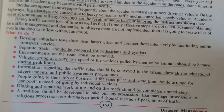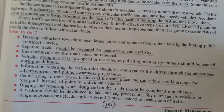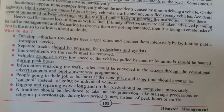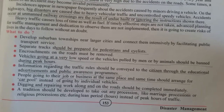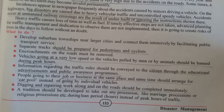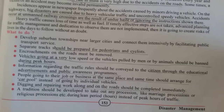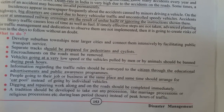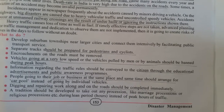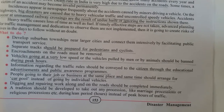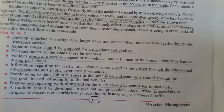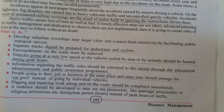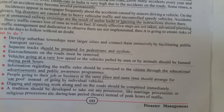What to do when we are in traffic: We should have flyovers, transport services should be maintained, and we should have separate tracks for pedestrians and cyclists. Encroachment on roads should be stopped. Low-speed vehicles pulled by animals or manually should avoid peak hours — such as office going and returning times. Traffic rules information should be provided to citizens through educational institutes, advertisements, and public awareness programs, through which we can make people aware about traffic rules.